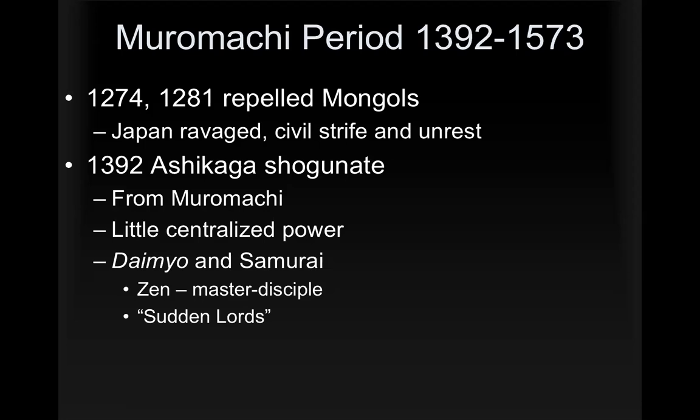In 1392, the Ashikaga shogunate from Muromachi — hence the name of the period — held power, though there was little centralized control, as is pretty typical for most of Japanese history. Power was located in the feudal lords, the daimyo and the samurai. Samurai found Zen particularly compelling for its focus on decisive action and the master-disciple relationship. This time is often called the time of the warring lords, with rapid rising and falling of power.